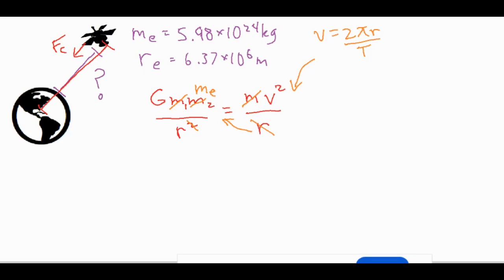And then capital T is the period, the amount of time it takes to complete that cycle. Now the time it takes to complete that cycle is 24 hours because it's a geosynchronous satellite. It's going to have the same period as the earth's rotation.